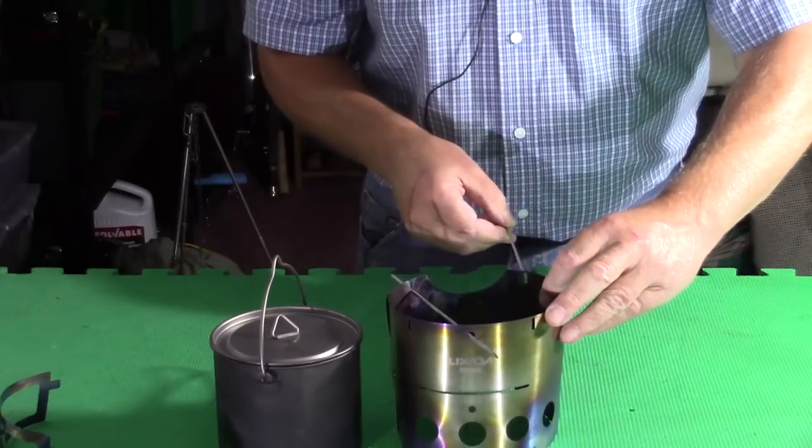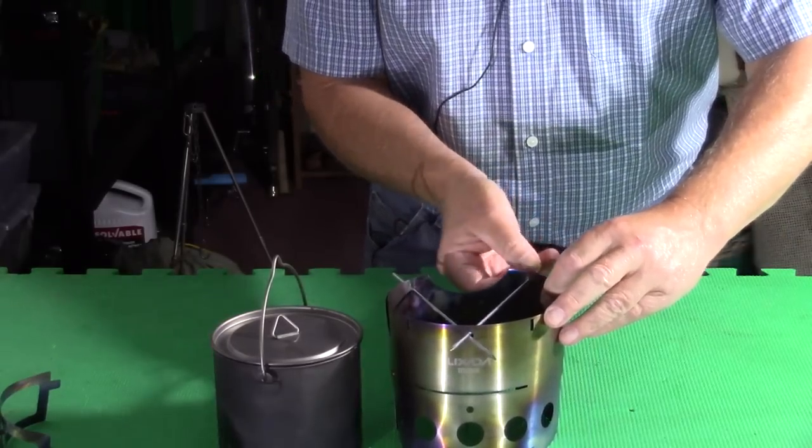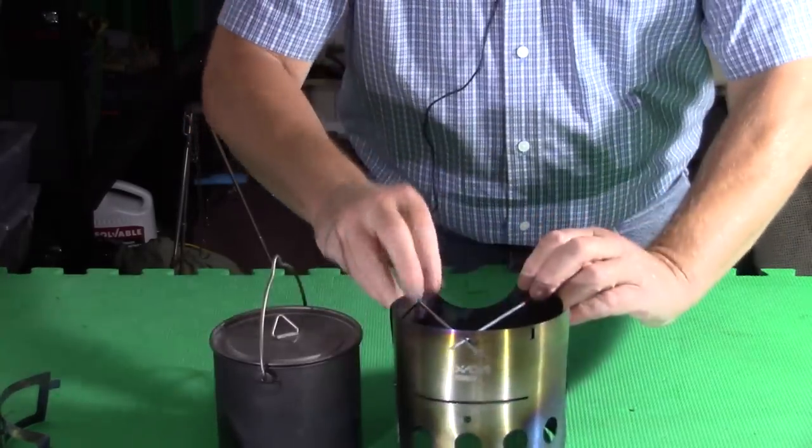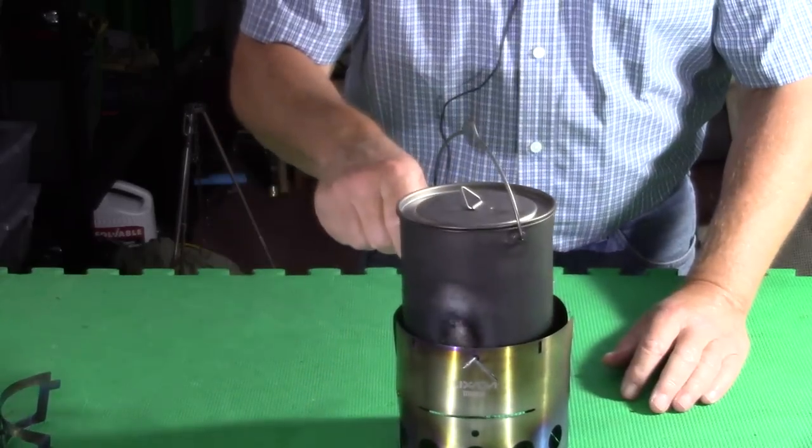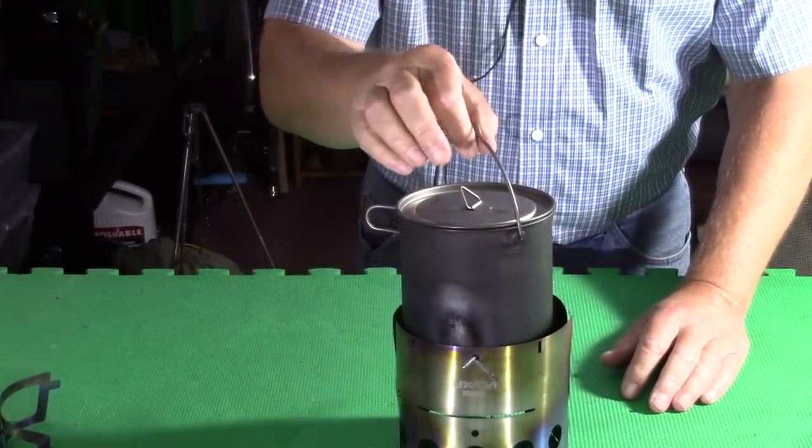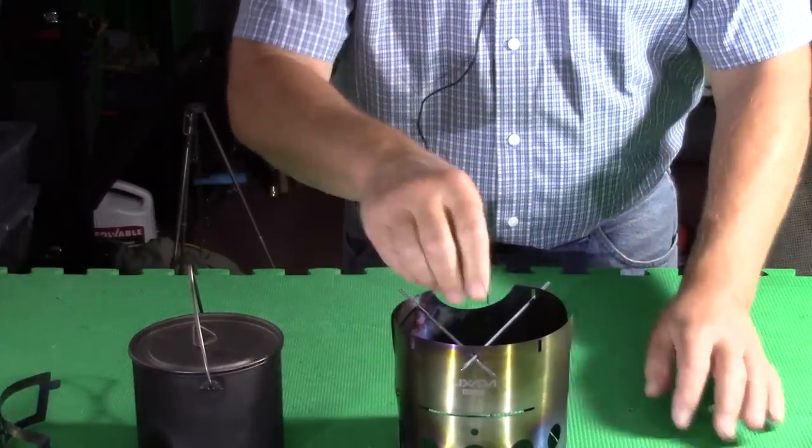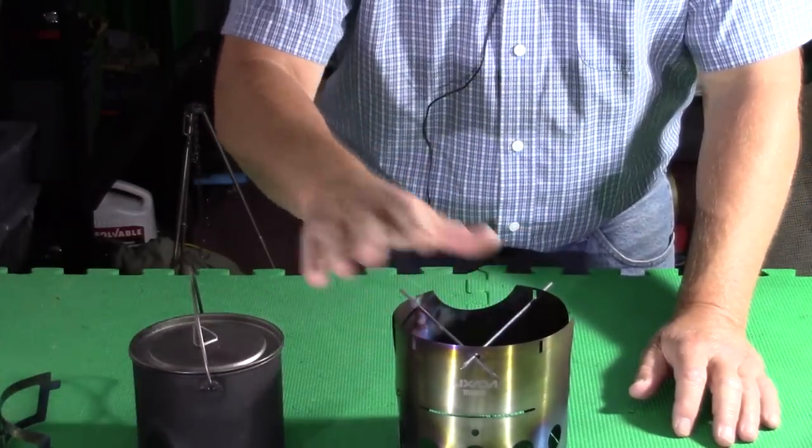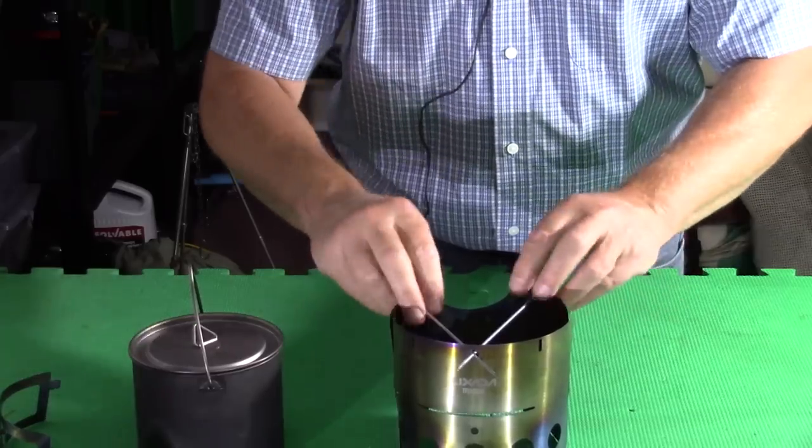Run the two skewers through in a V formation like that, and now an even smaller pot, right down to a GSI cup or one of the other small cups or the Stanley Adventure, will sit on top of this. It's a little towards the side but close enough now that it'll hold the pots up. So I can still use this with smaller pots.